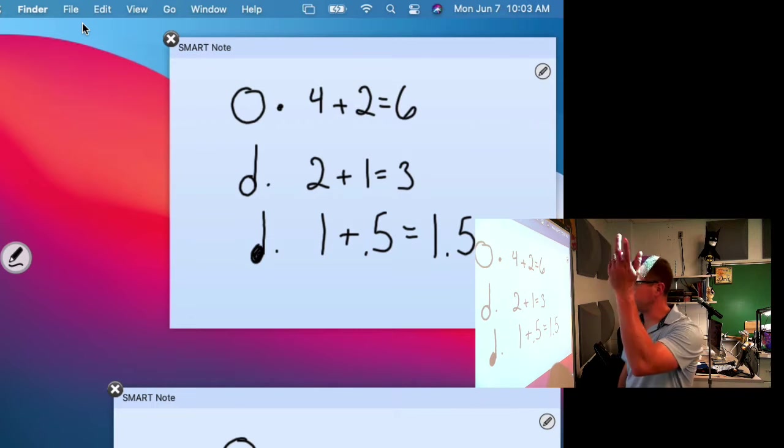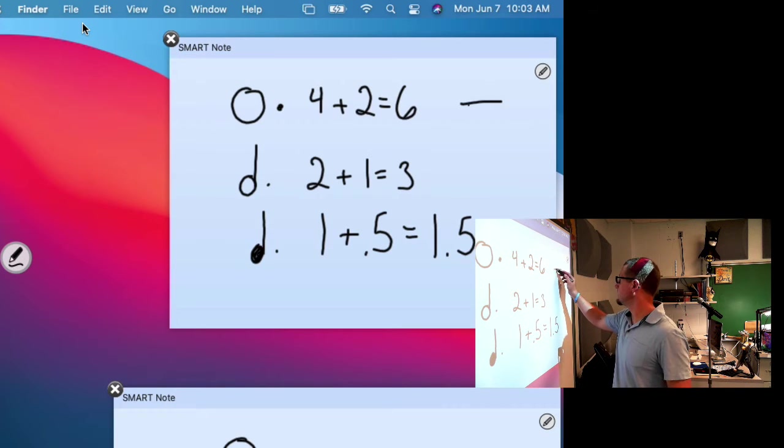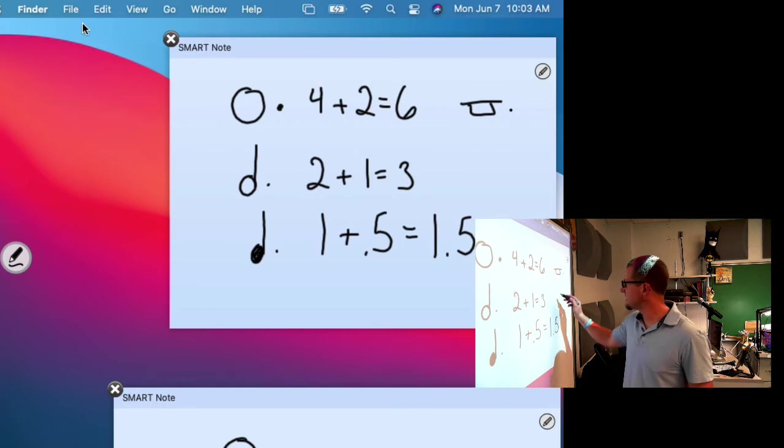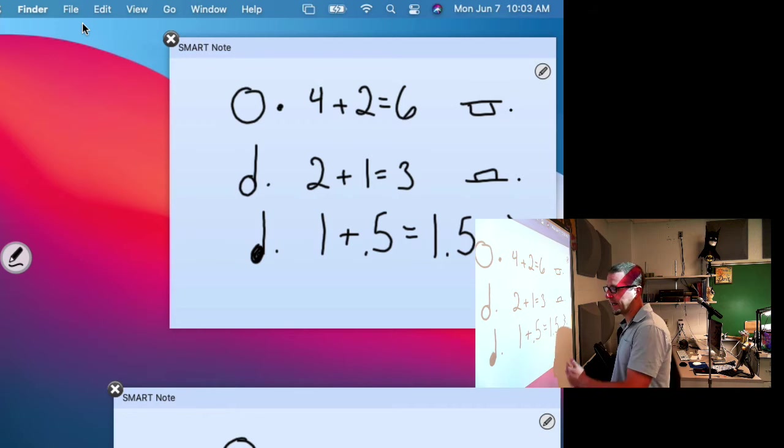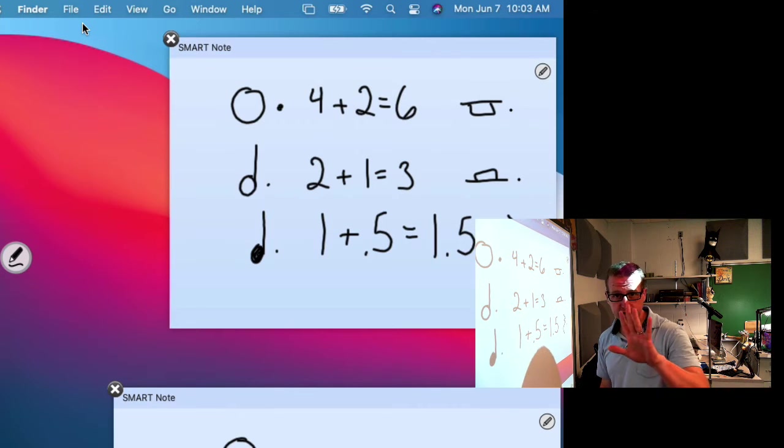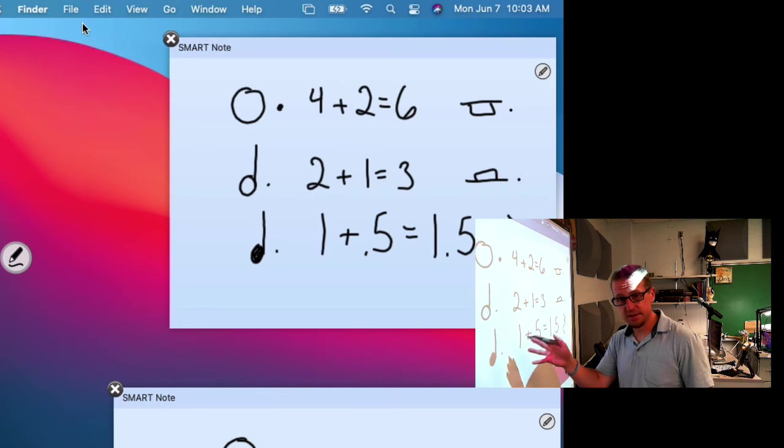That's the same for the rests as well. A dotted whole rest would be six. A dotted half rest would be three. A dotted quarter rest would be one and a half. So a dotted eighth, if you want to think about it, you can. But you know what, for fifth grade, guys, this is really good already to know all of this.